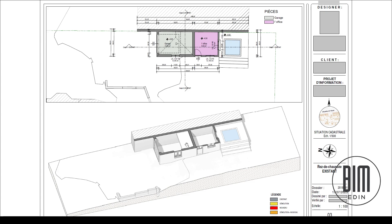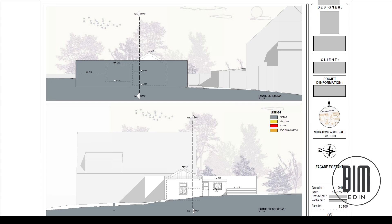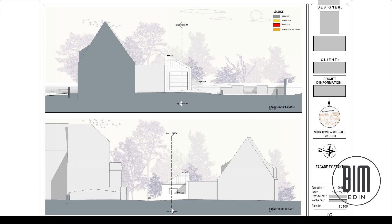This is the ground floor and this is one small existing house with single floor plan and isometric view. Here we have legends: for existing, demolition in red, and new. In the sections and elevations for the existing phase, we have section one and section two, along with elevation views.